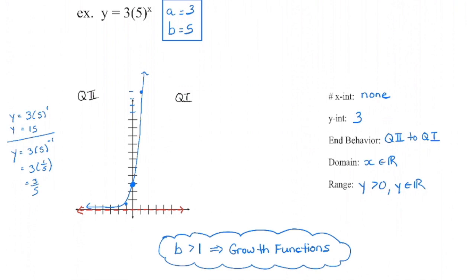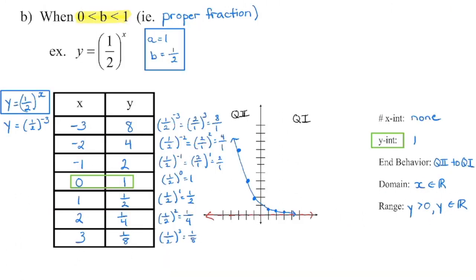That is the first type of exponential function. We're now going to take a look at what happens when b is less than 1. We know if it's greater than 1 it's a growth function, and b can't be negative. So that limits us to b being between 0 and 1 — in other words, b will be a proper fraction or its decimal equivalent. b is the base of the power, and there's the exponent as a variable, making it exponential. So b is 1 half and a is 1.